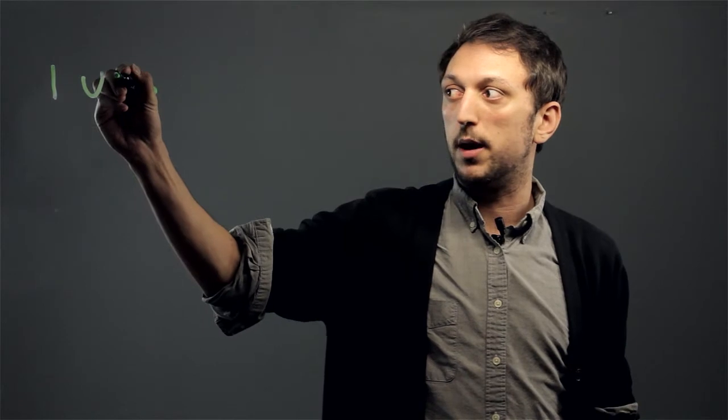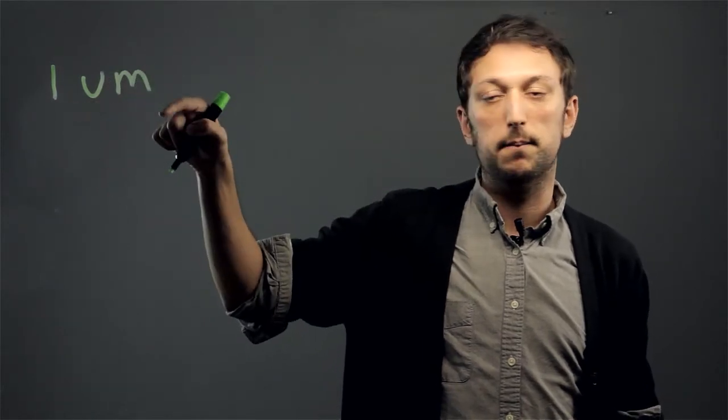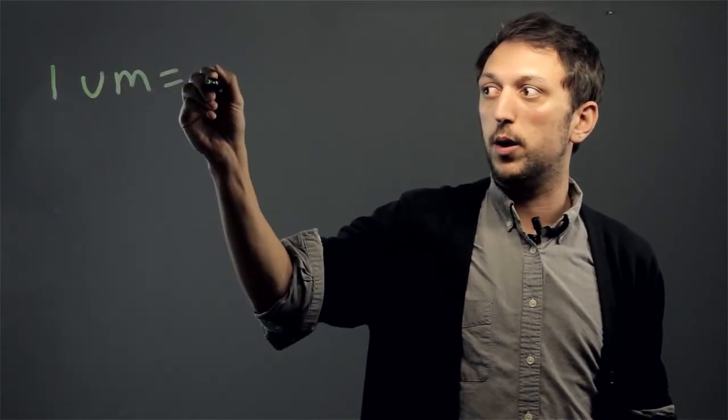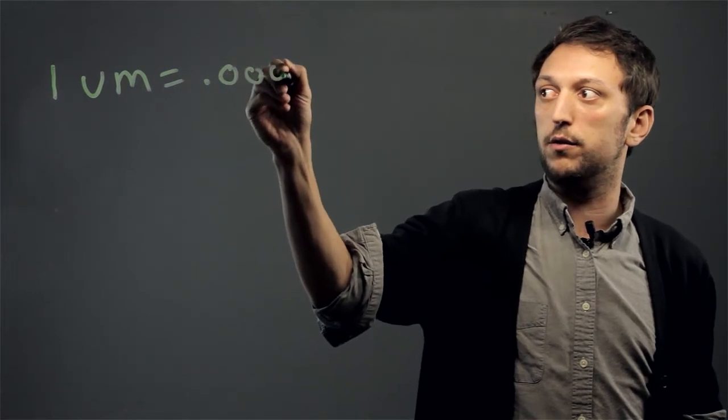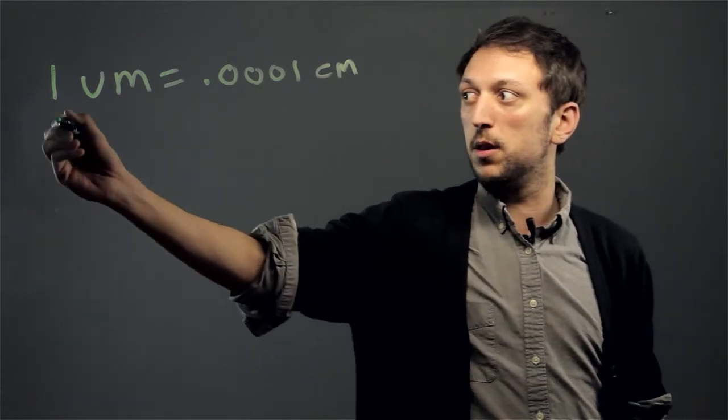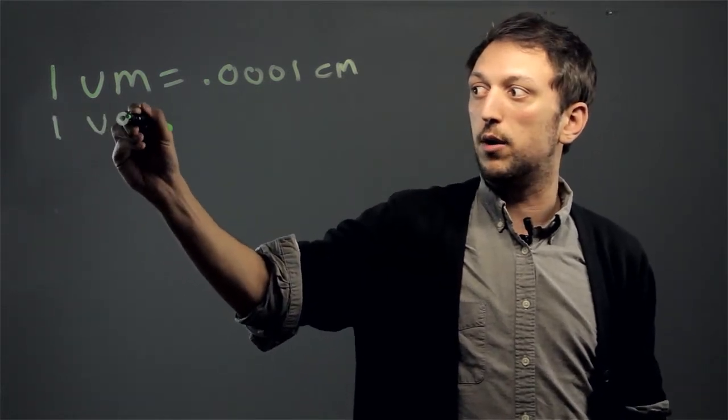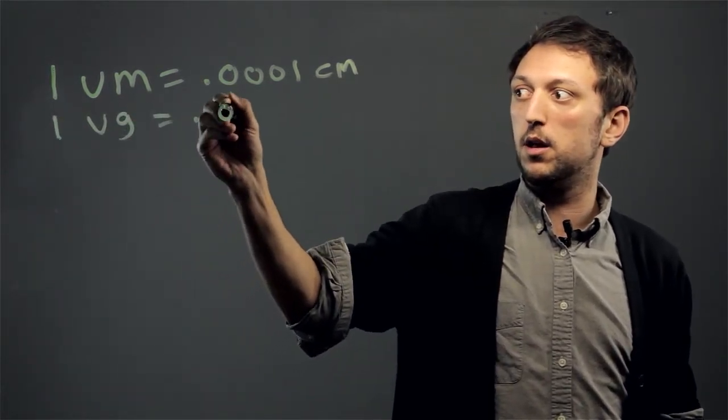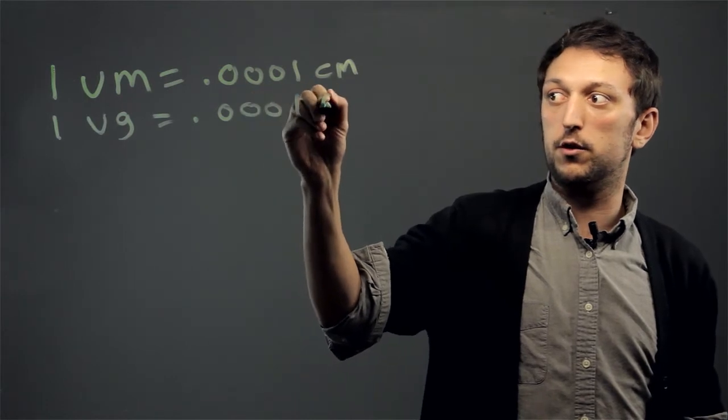So the conversion rate is one microgram or micrometer equals 0.0001 centimeter, or one ten-thousandth of a centimeter. The same would hold true for a microgram to a centigram.